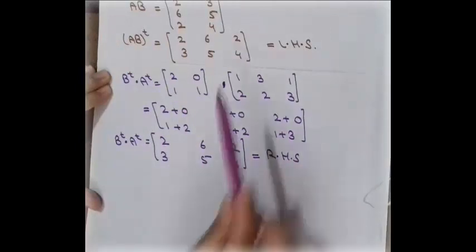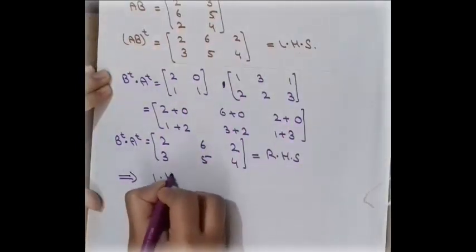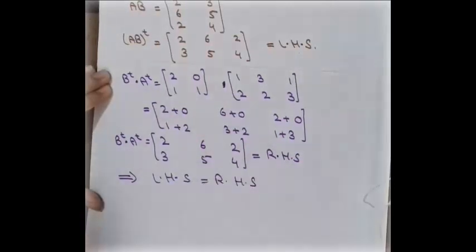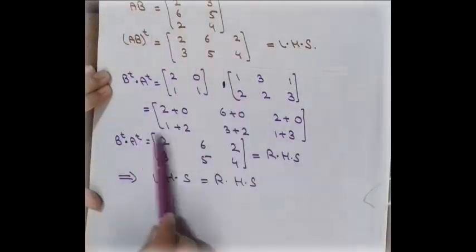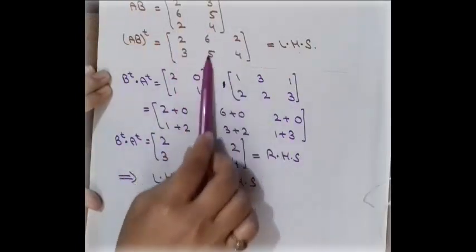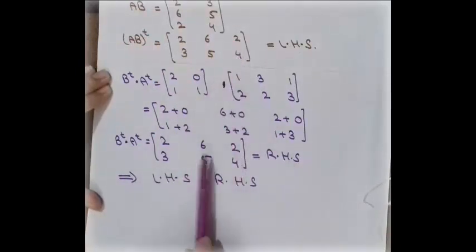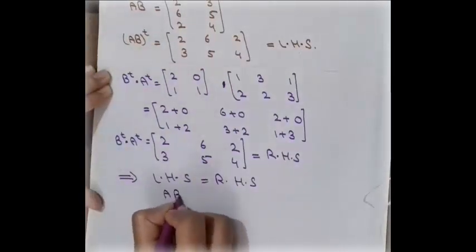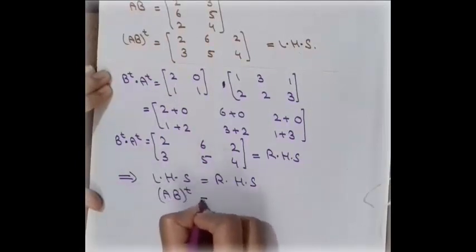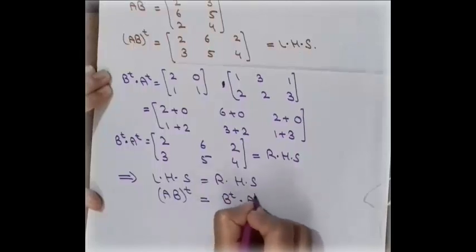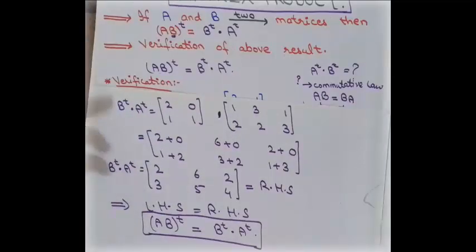As you can see, the right-hand side equals the left-hand side. We conclude that LHS equals RHS because their corresponding entries are the same: the (1,1) entry is 2, the (1,2) entry is 6, and similarly for 2, 3, 5, and 4 — both matrices are equal. Therefore, the transpose of the product of two matrices (AB)ᵀ equals Bᵀ multiplied by Aᵀ. This is a very important theorem and property of the transpose.